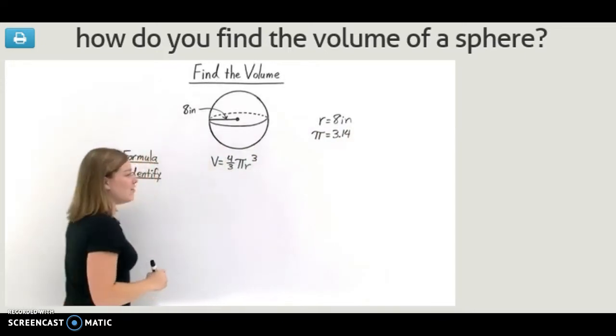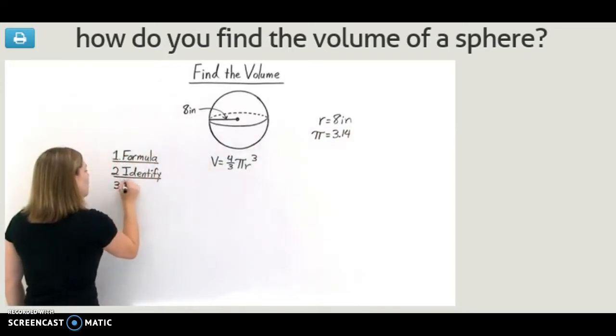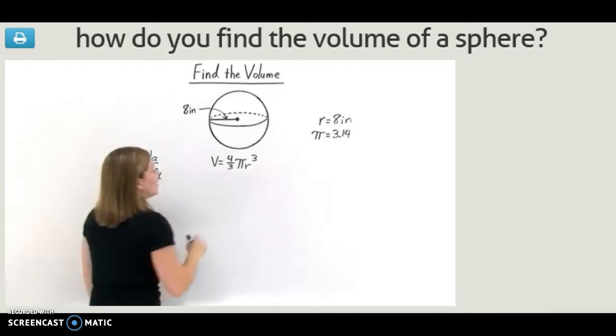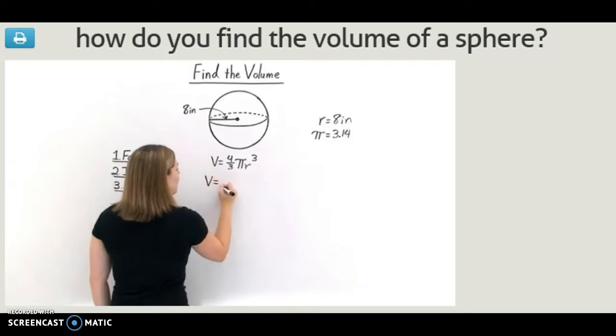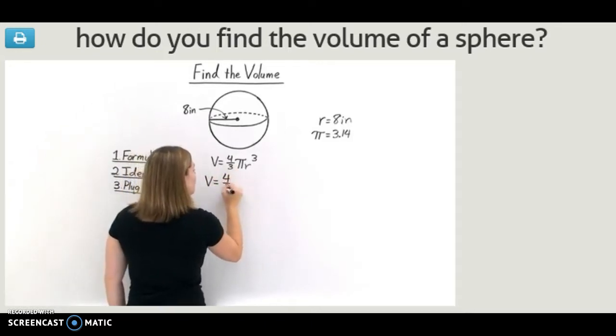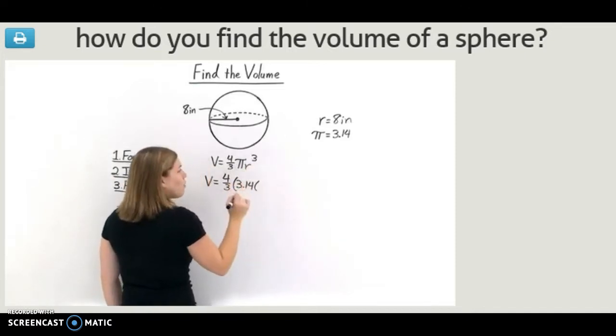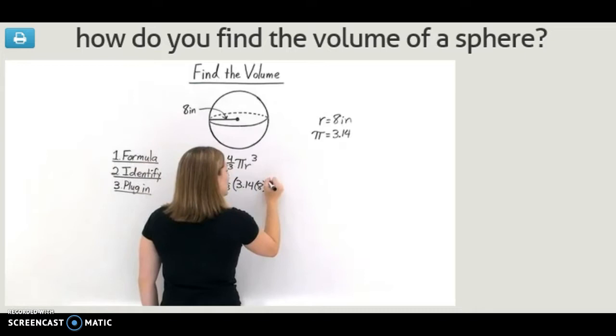Now that we've identified these variables, let's go through our formula and plug the variables in. The volume of our sphere v is equal to 4 thirds times pi, which we're approximating as 3.14, times r cubed, the radius cubed, which would be 8 cubed.